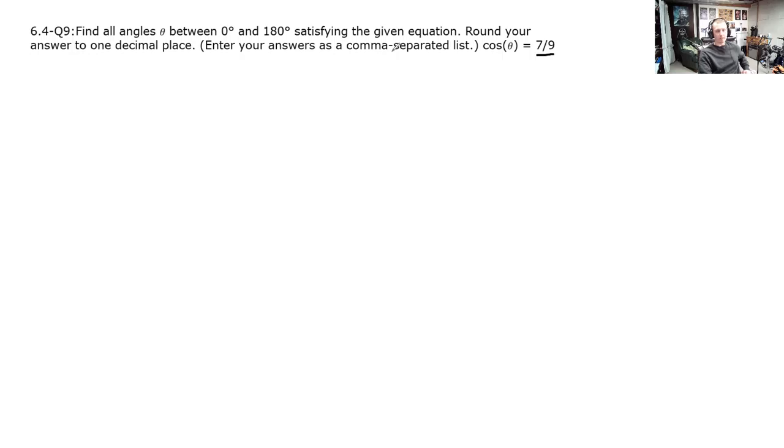Alright, so find every angle between 0 and 180 satisfying the given equation. Round your answers to one decimal place to the tenths and enter them as a comma separated list. Cosine of seven ninths, cosine of an angle of seven ninths. Okay, so first I'm drawing a unit circle because we're only looking for angles up here in the top half. That's 0 degrees and 180 degrees. Okay, that's the first thing to notice.